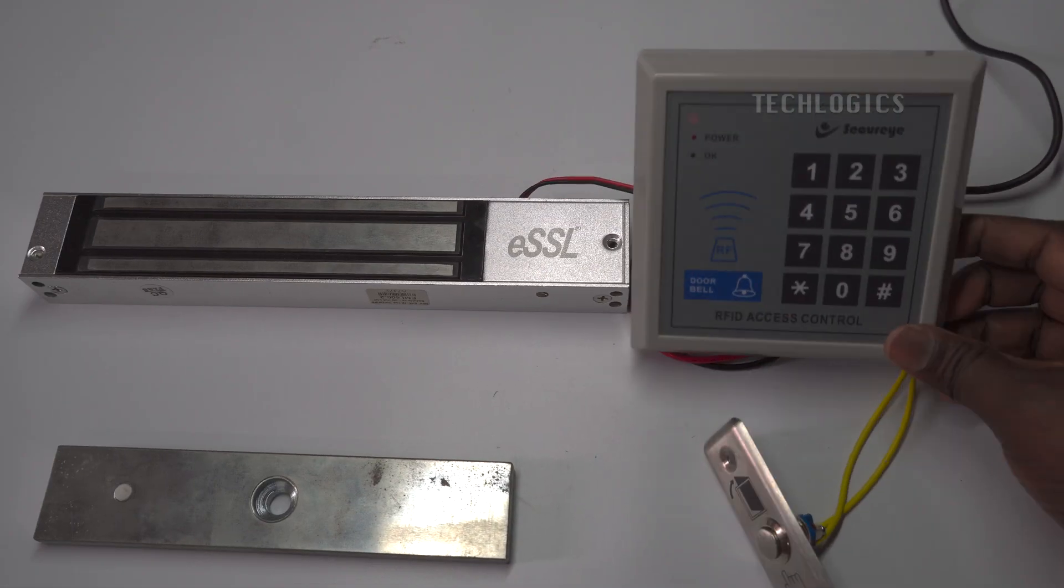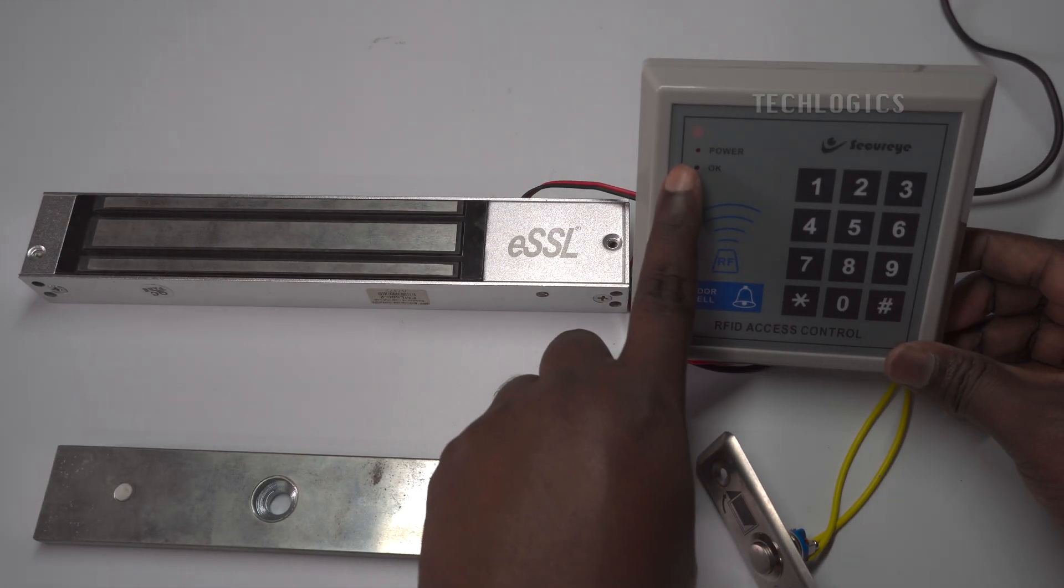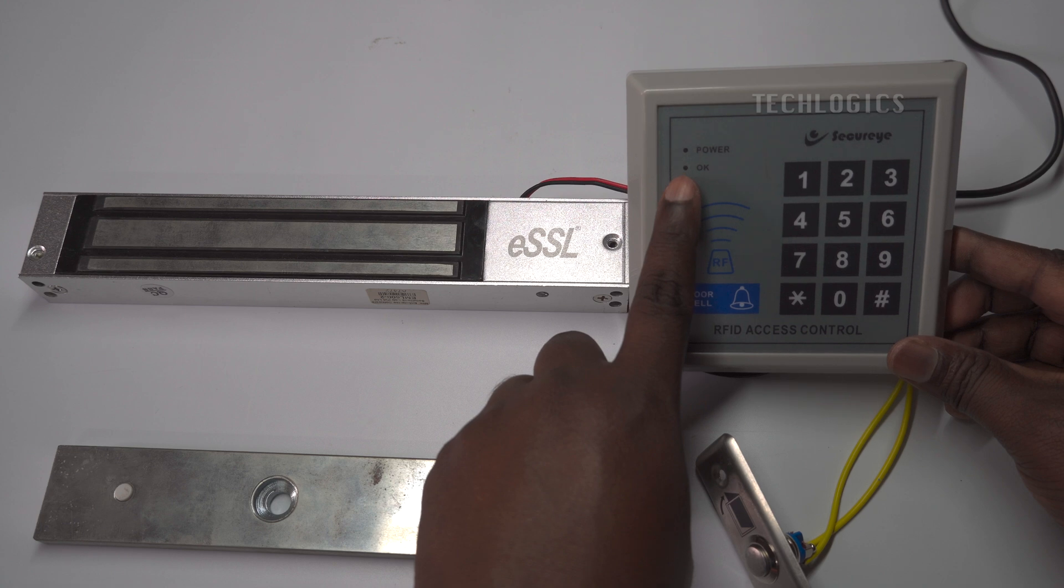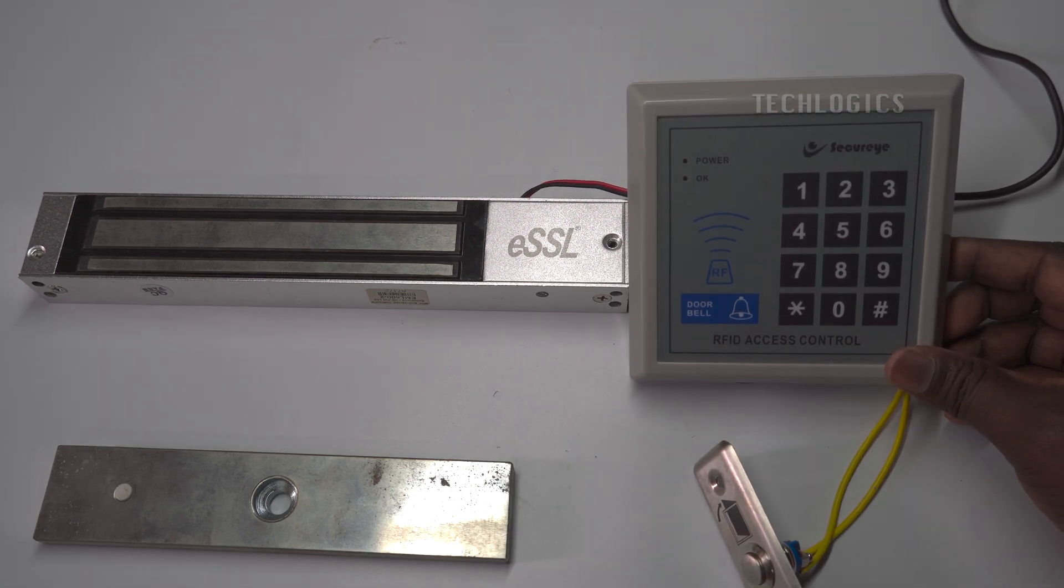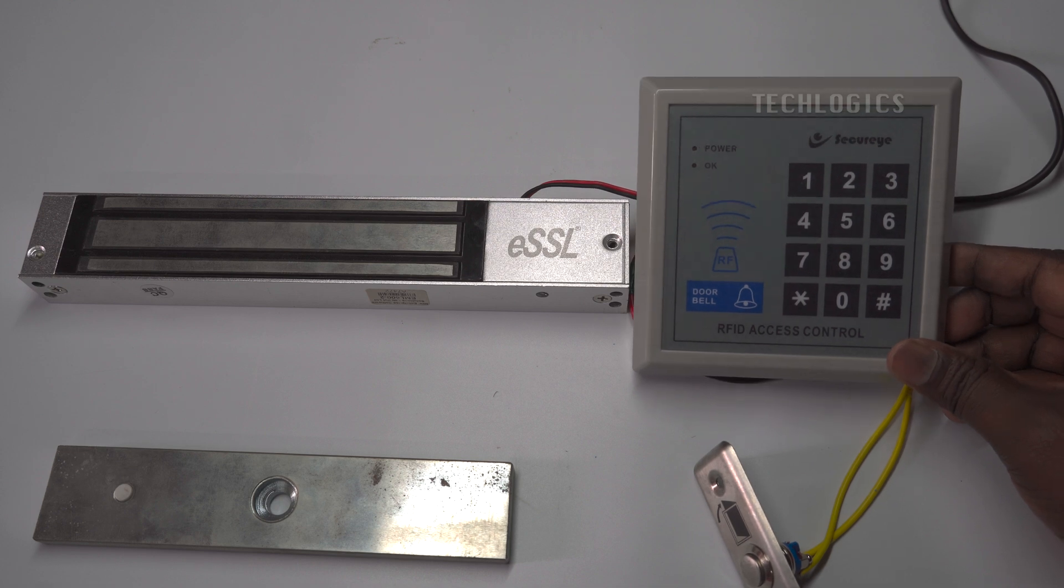Once you have completed the wiring, power up the device to check the system. Ensure all connections are secure and verify that the electromagnetic lock and exit switch function correctly with the access controller.